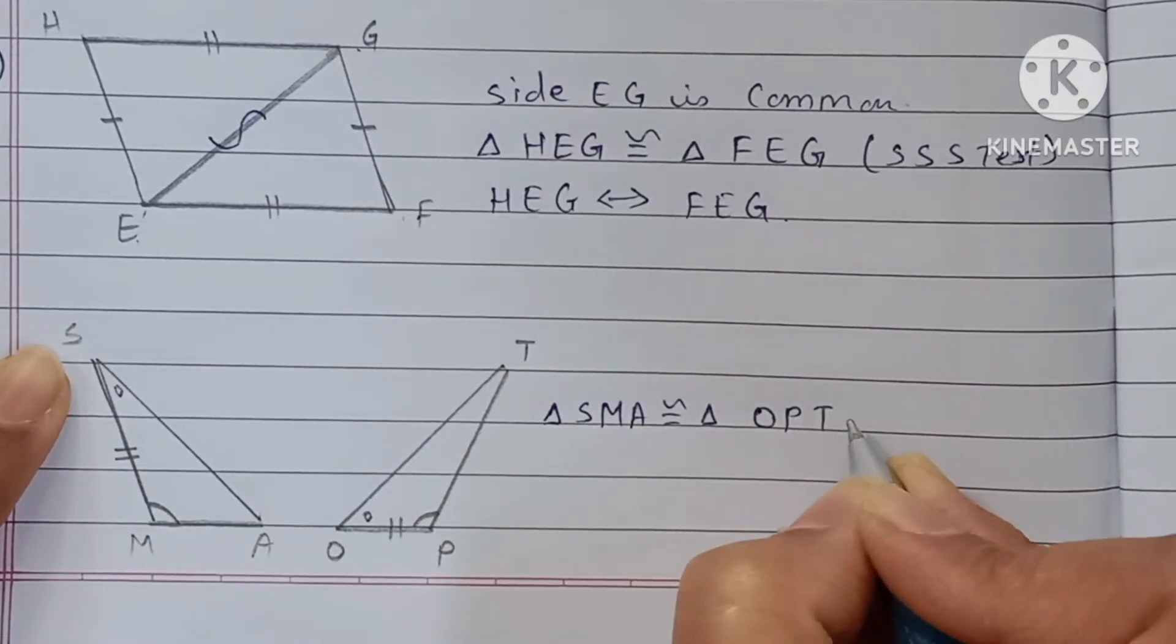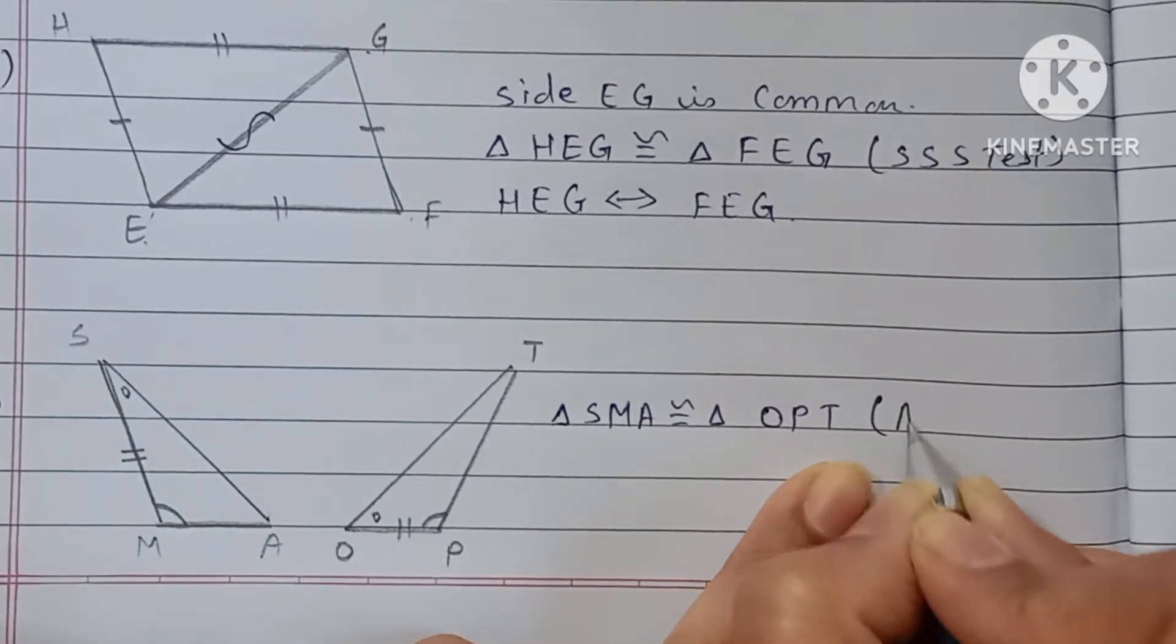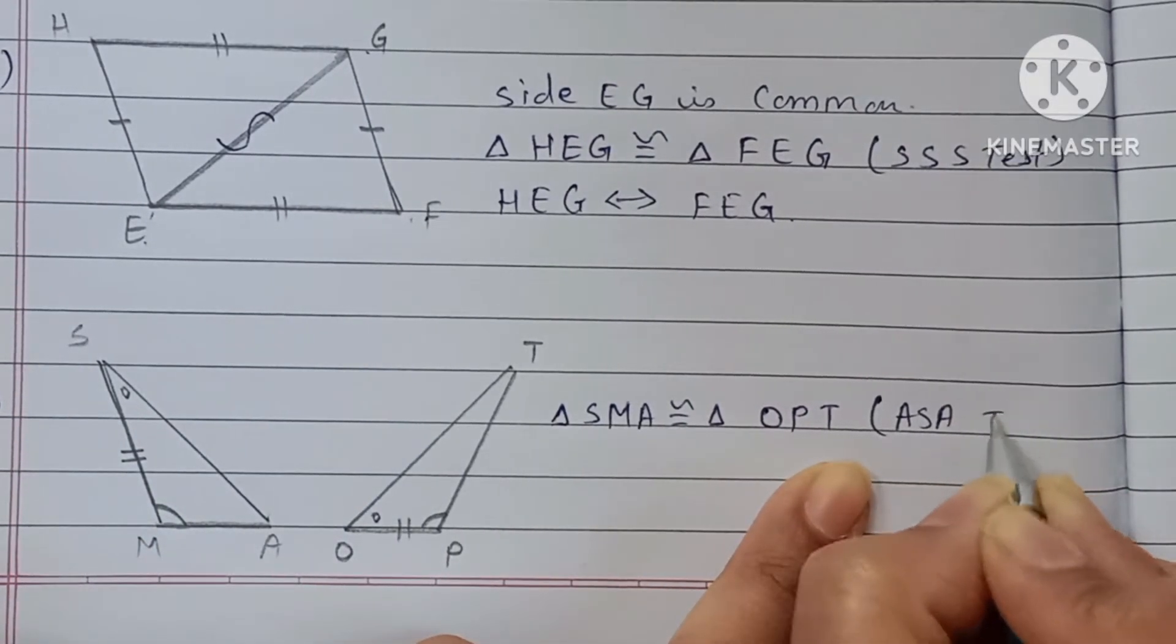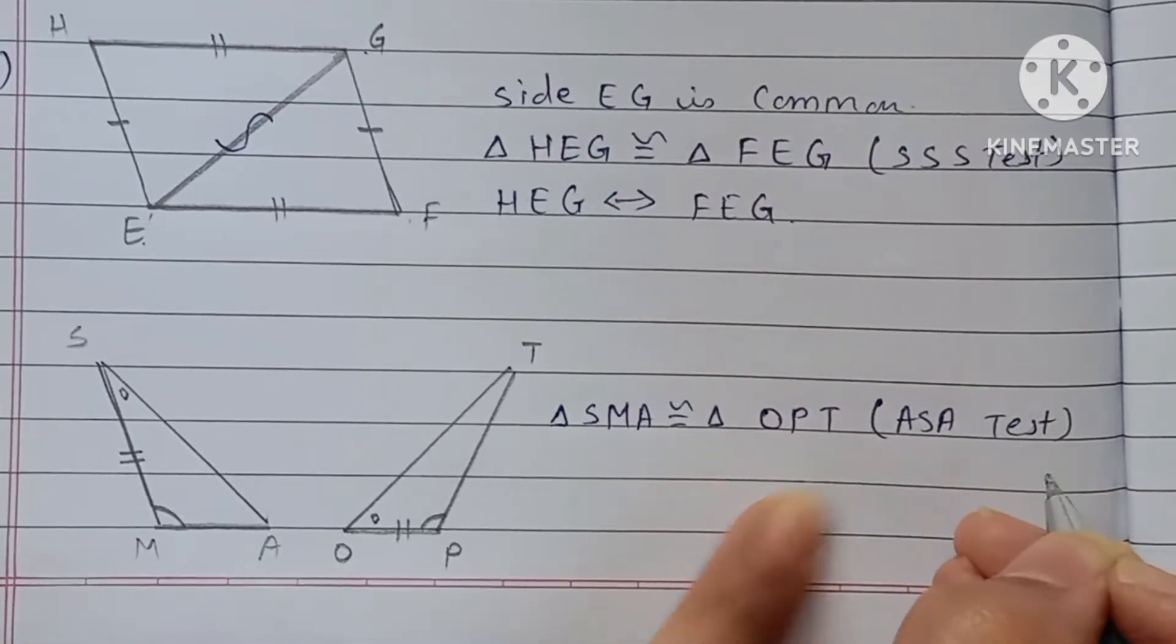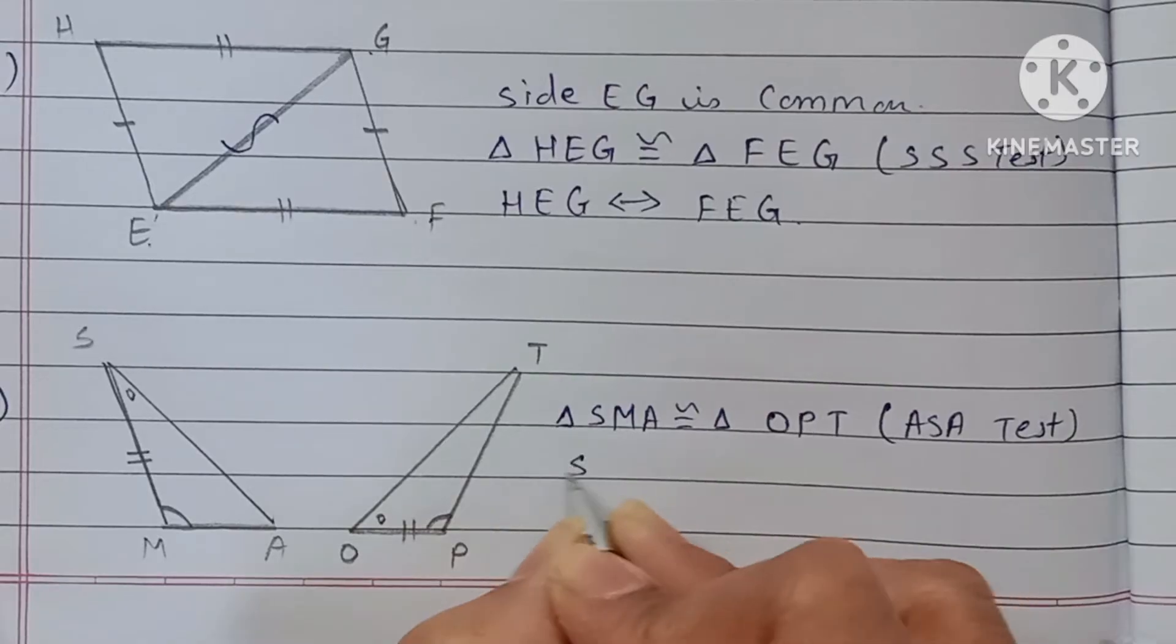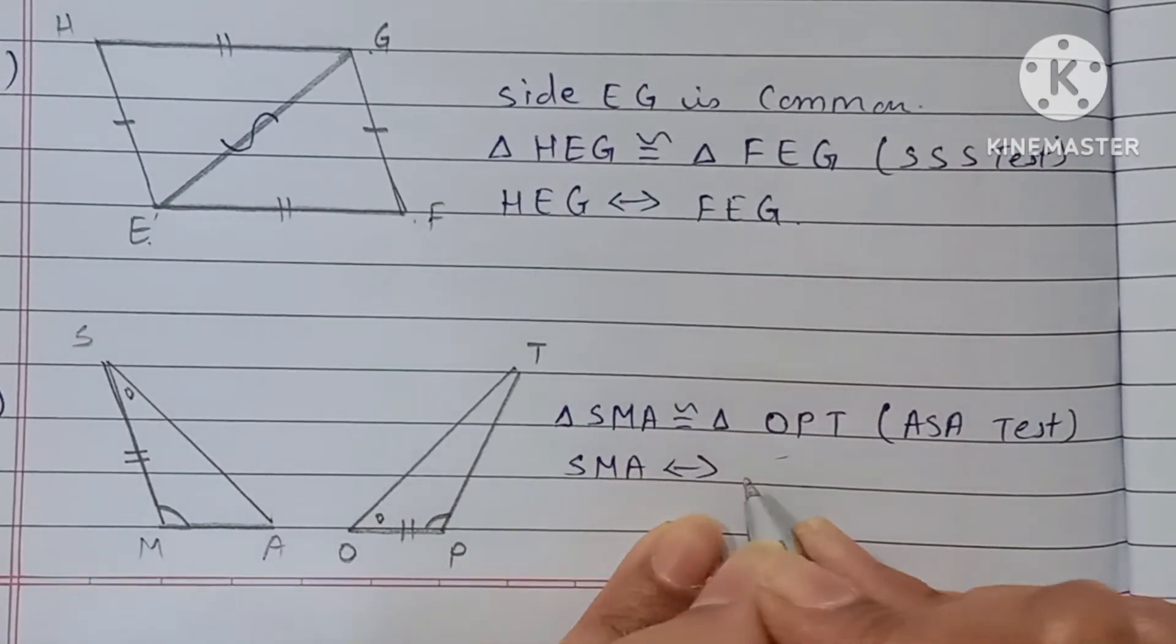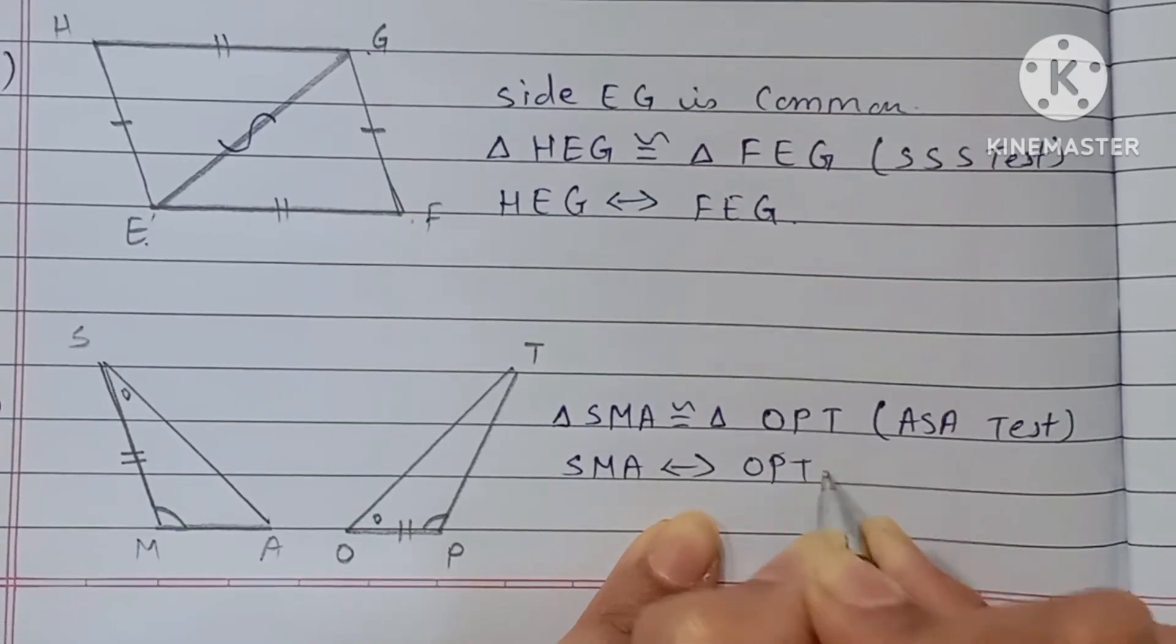First we will write down the names of triangles to show correspondence: angle-side-angle, means ASA test. One-to-one correspondence: SMA corresponds to OPT.